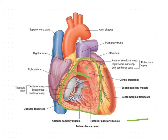In the outflowing part, there is the pulmonary valve, which has three semilunar-shaped cusps: the anterior semilunar cusp, the right semilunar cusp, and the left semilunar cusp, all guarding the pulmonary orifice. After contraction of the right ventricle, blood is pumped from the inflowing part into the outflowing part and out to the lungs through the pulmonary trunk.